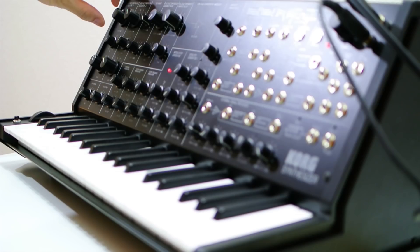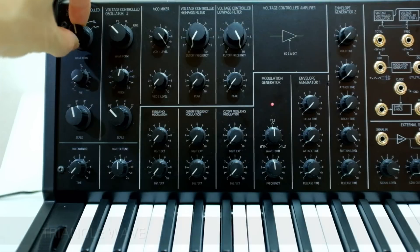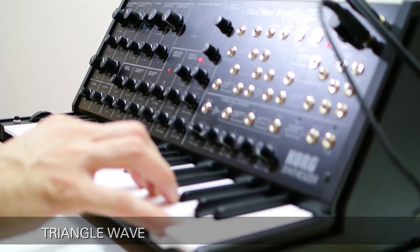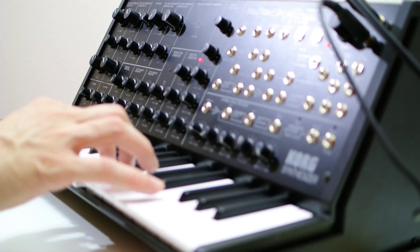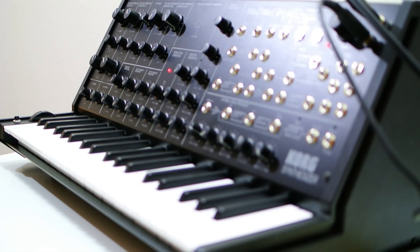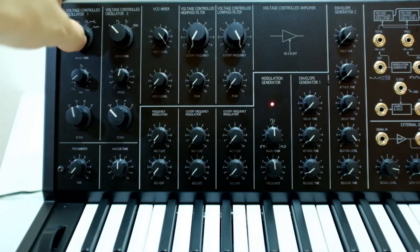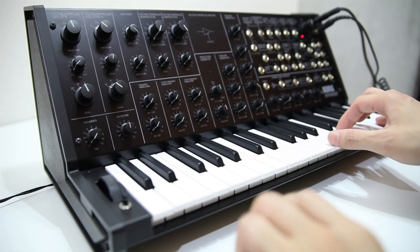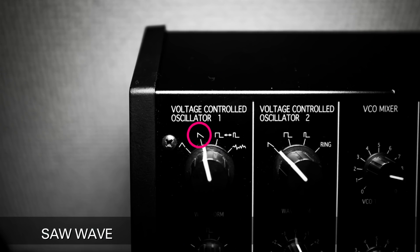Let's start with the waveform all the way to the left. First we'll talk about the triangle wave. This is the basic waveform which has the least amount of harmonics. Next is the saw wave. This waveform has the most harmonics and it's used quite often.